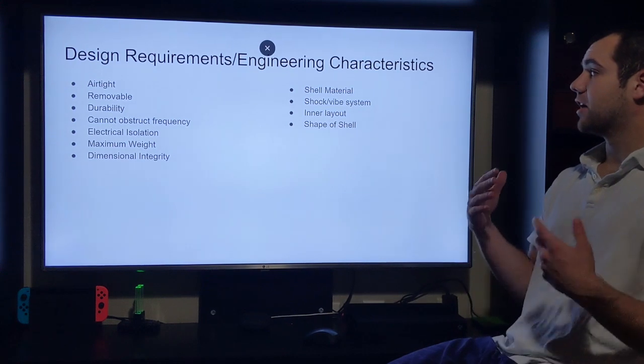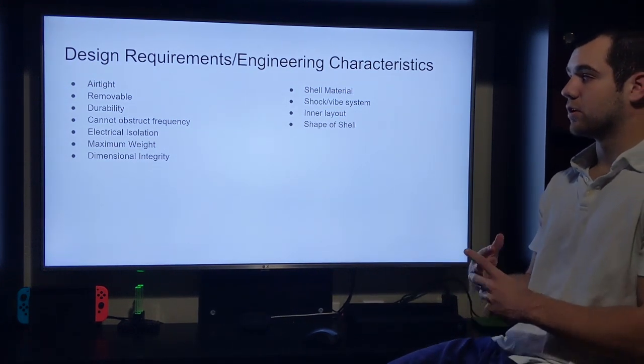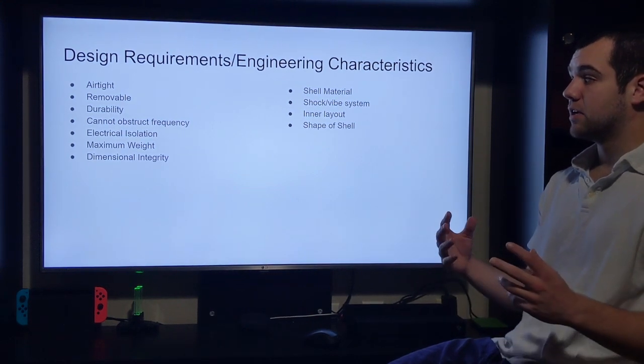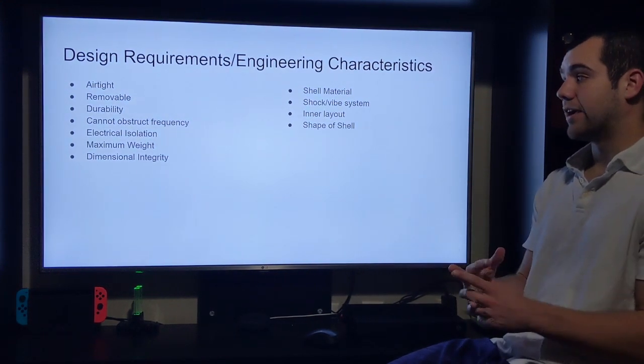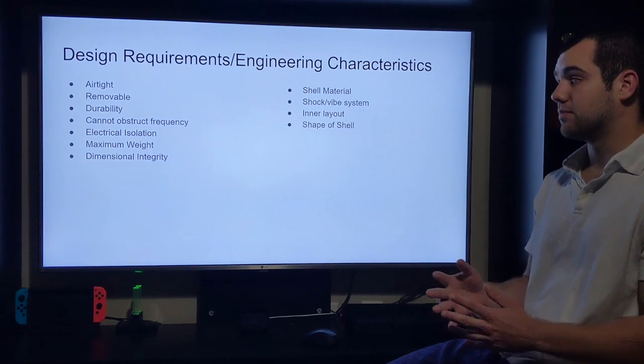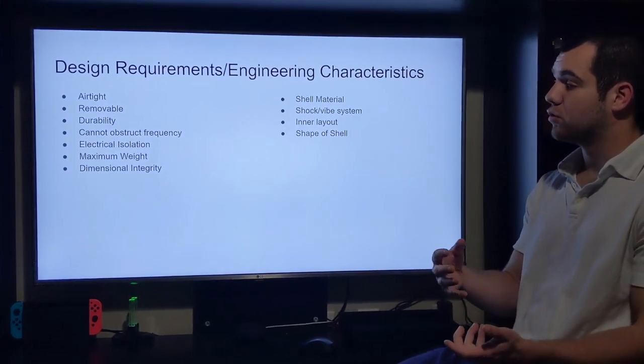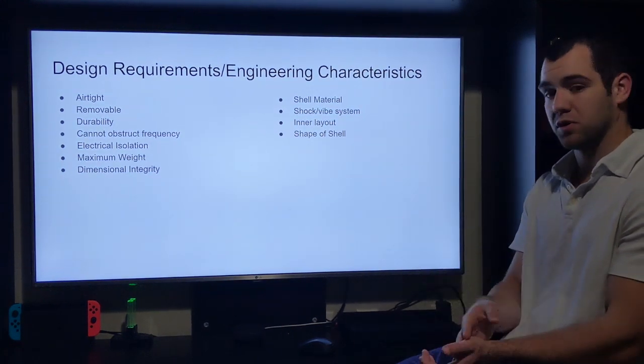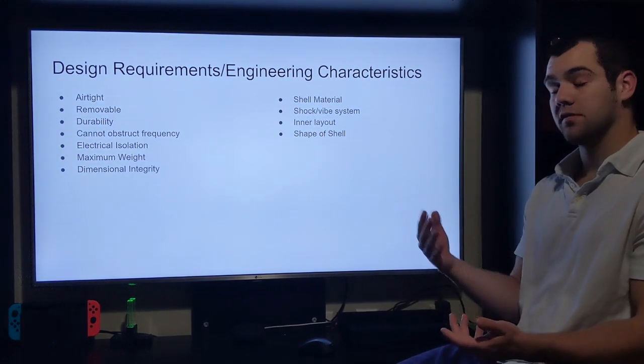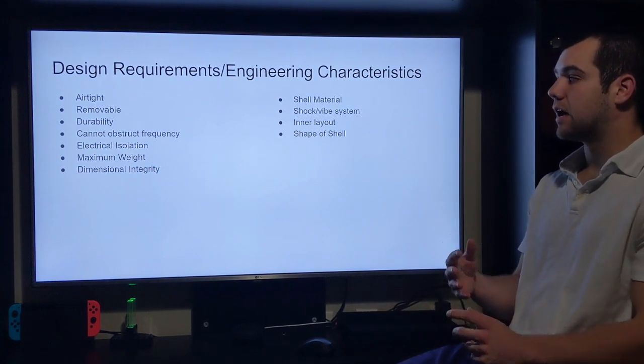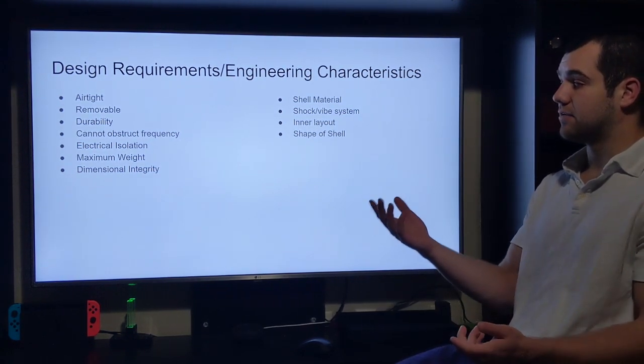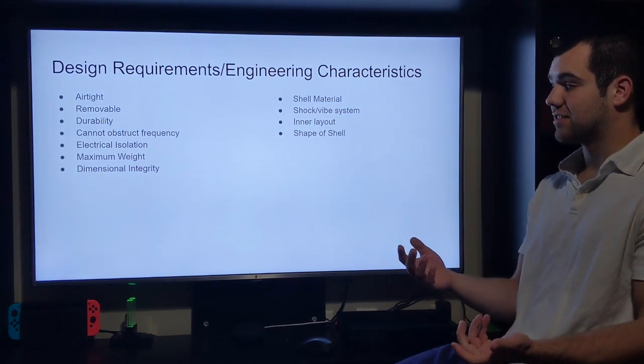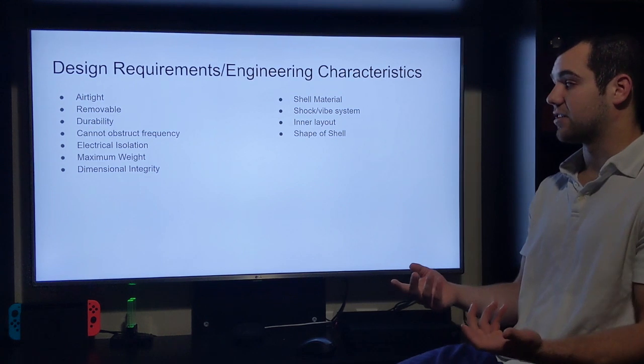And here's some engineering characteristics we're looking for, we're designing towards. So the design has got to be airtight, it can't allow flow of water or air into the cylinder to break that EMP device. It's got to be removable, you've got to be able to pull this thing out and work on it, replace damaged components. Obviously it has to be durable, we're going to be dropping it. It can't obstruct that EMP frequency, obviously a huge one. It's got to be electrically isolating, so you're not touching this thing and getting a shock.